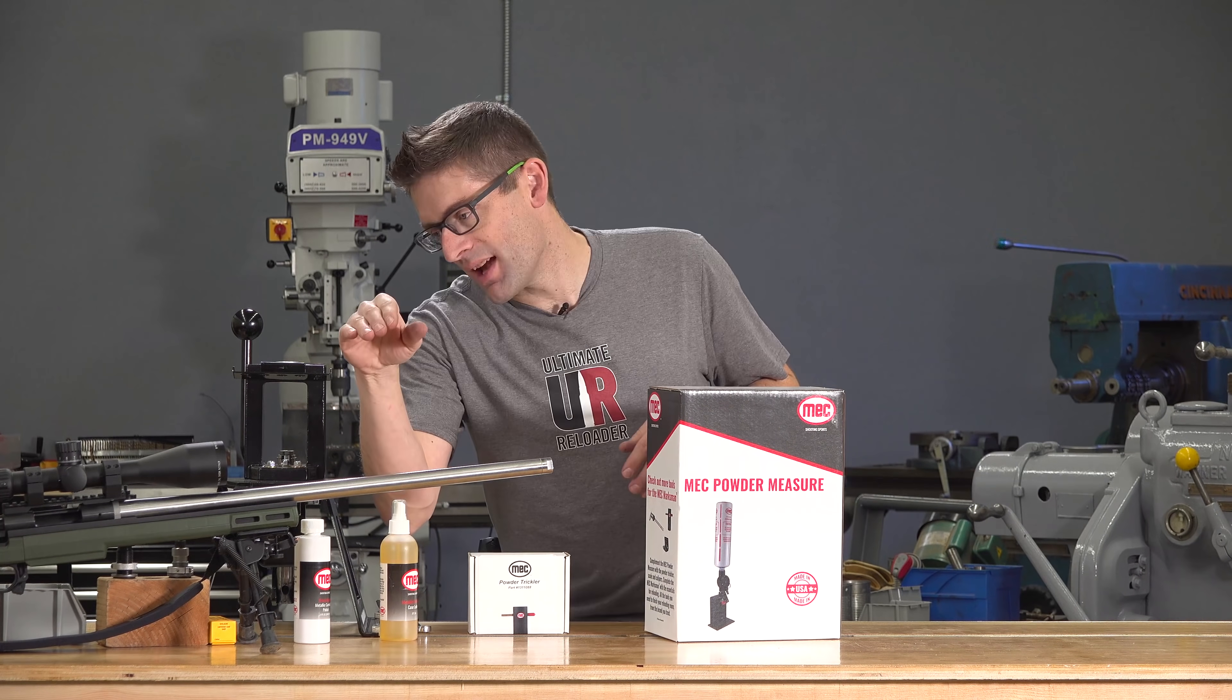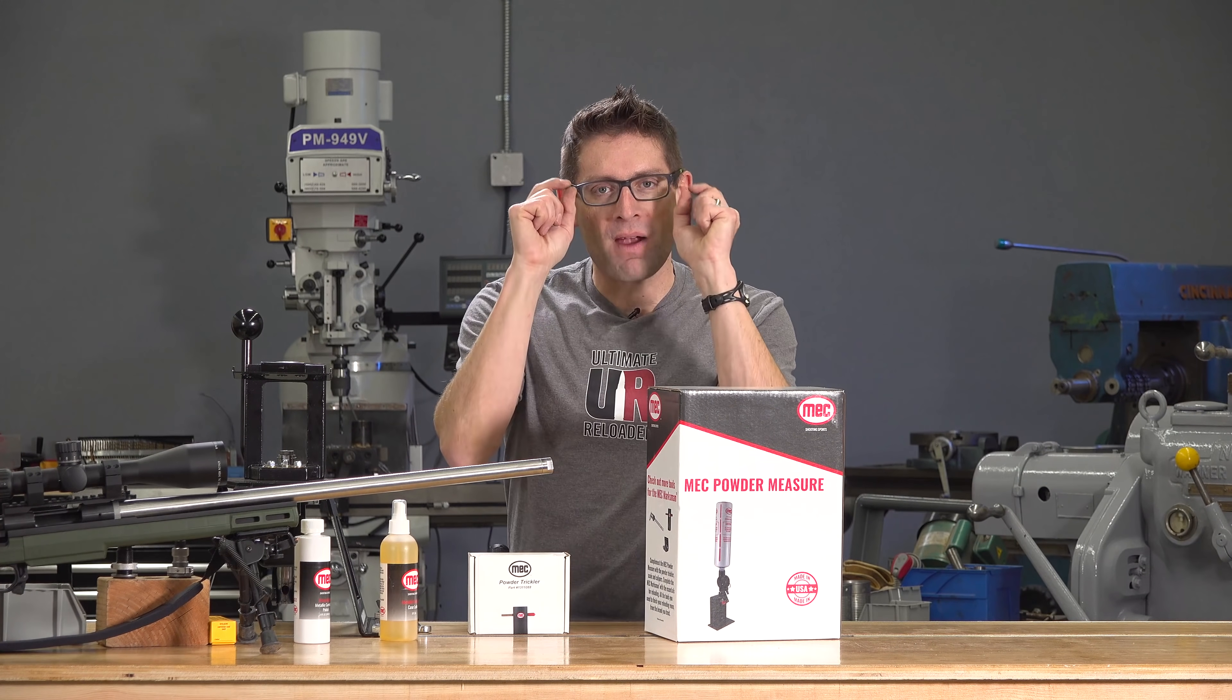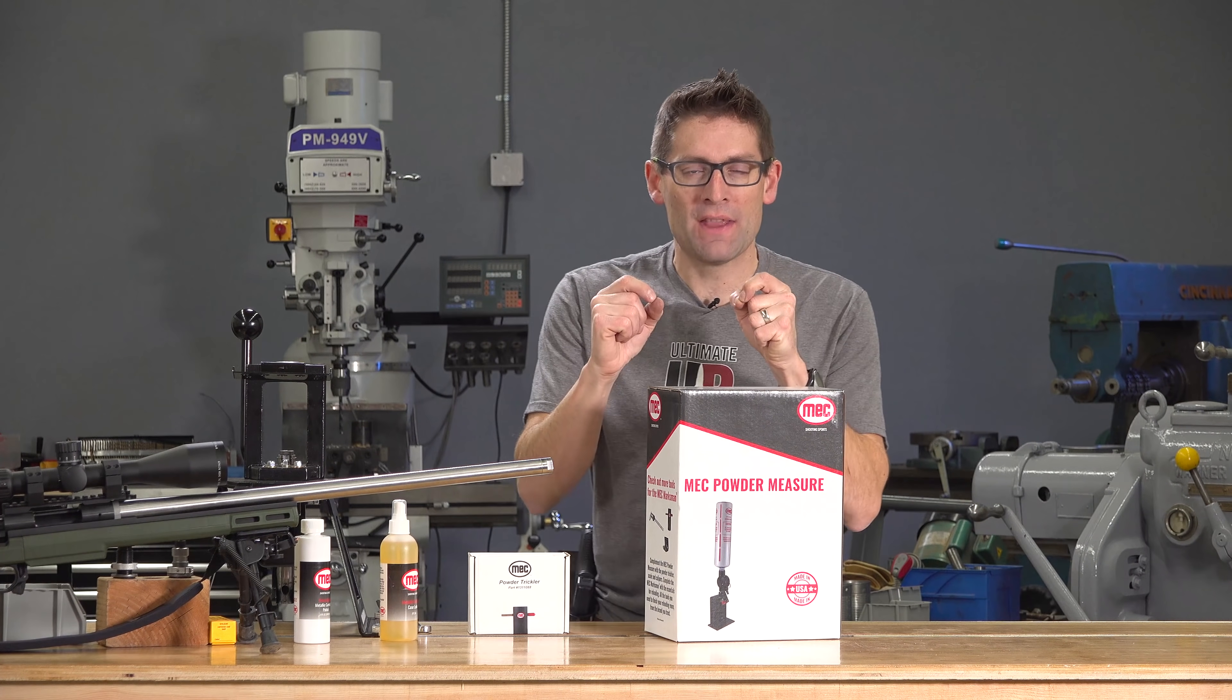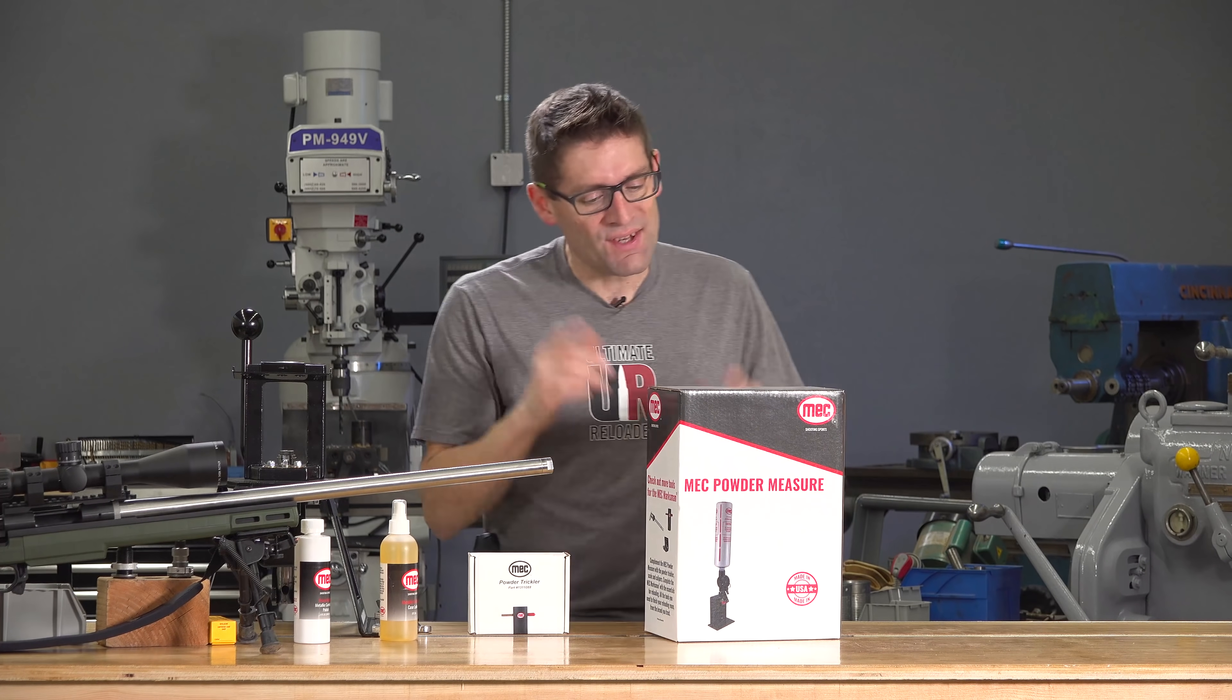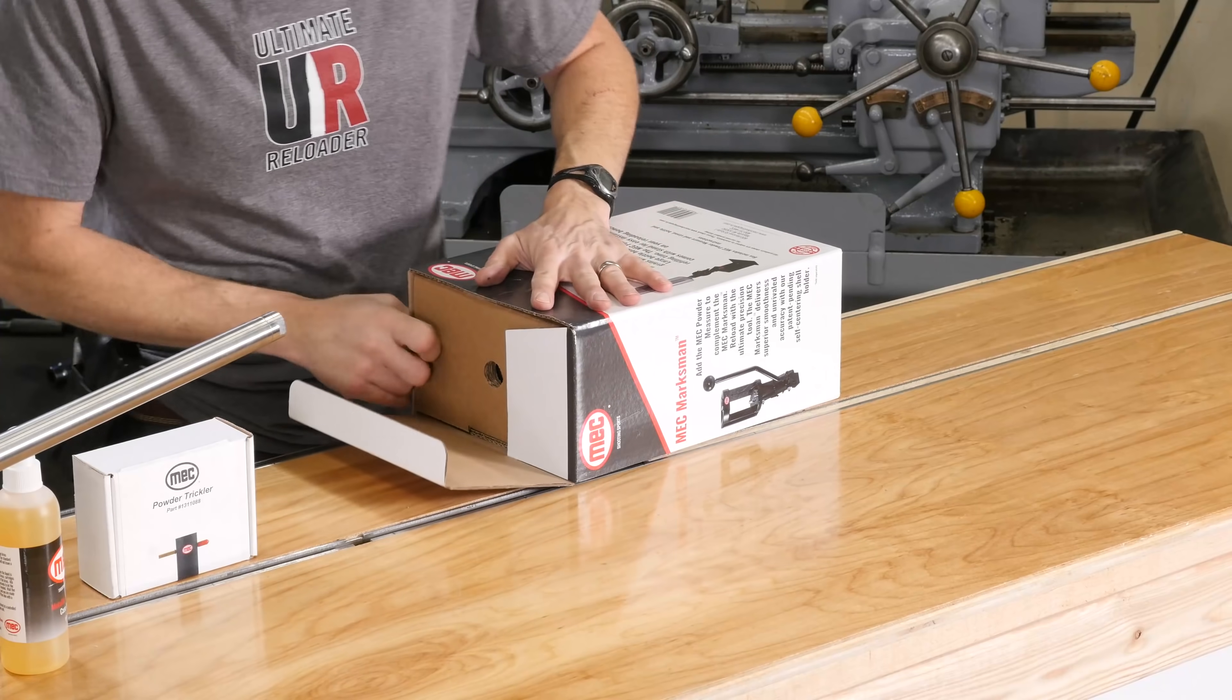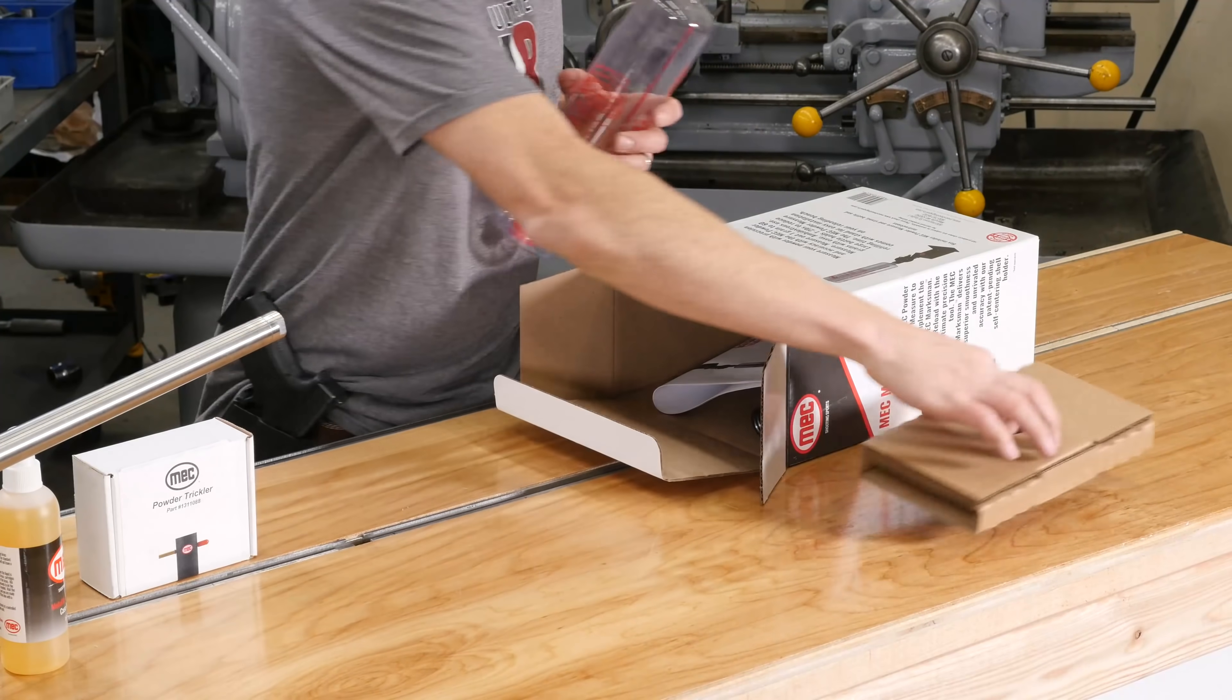I've got this custom Remington 700 and I'm going to get real precise with my reloads so that I can shoot some more groups and evaluate this Hornady 88 grain ELDM load that's been performing well. I want to see if I can get it to perform just a little bit better. So, let's get into it. I'm going to open the box here. We'll see what's inside. And then I will mount it to the Ultimate Reloader Bench System, which I've got here.